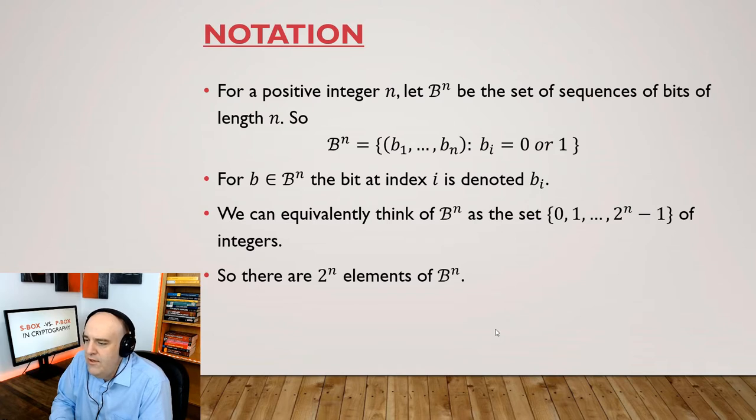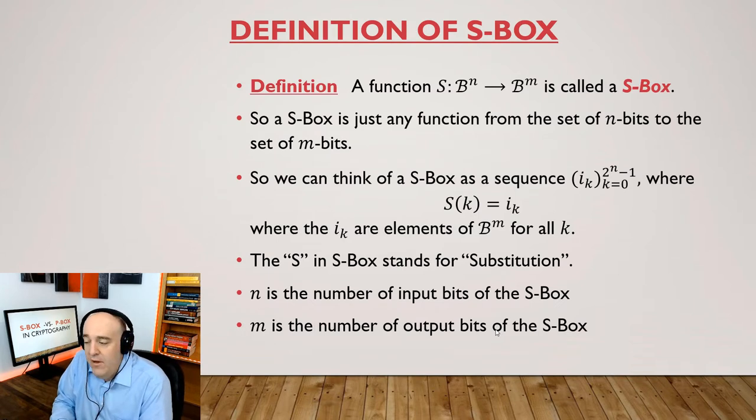So why don't we just introduce a little notation here for a positive integer N. We'll let BN be the set of all sequences of bits of length N. So BN is really just blocks of zeros and ones of length N. And if we're given an element of BN, little b, then the bit value at position i is just going to be bi.